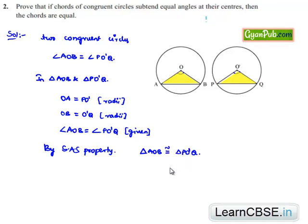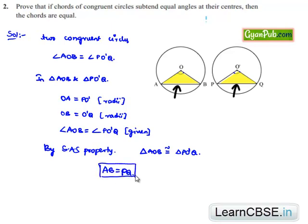Therefore, we know that when two triangles are congruent, their corresponding sides and corresponding angles can be equated. Therefore, AB is equal to PQ. Thus, the chords which subtend equal angles at the center are of equal length. This is proved.